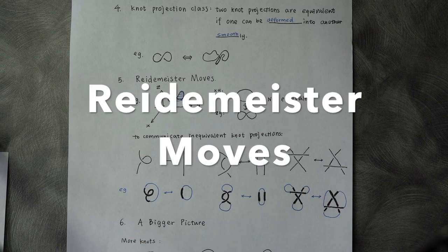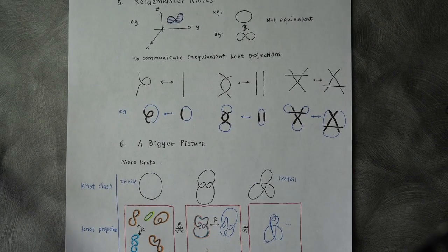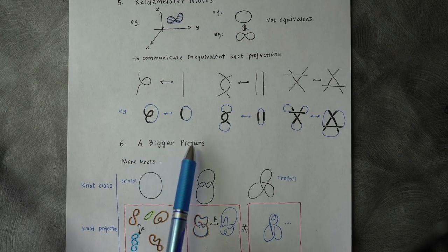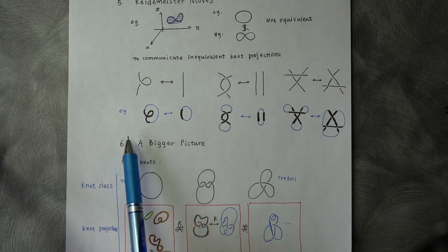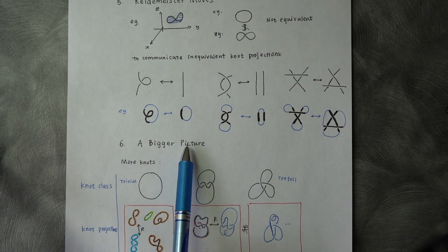Here, we have Reidemeister moves, which contains the following three elements. Reidemeister moves can help us transfer from one knot projection to the other. For example, the first one has one crossing here, but with the first move, we can resolve it.